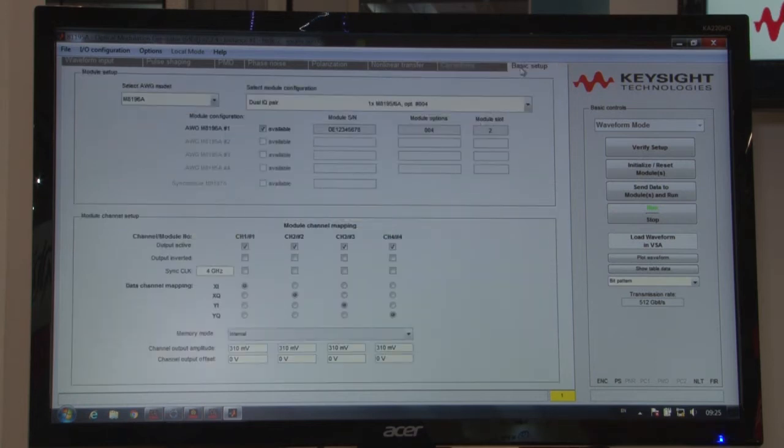On the basic setup page I have the access to turn on and off channels. I can assign channels to specific XI, X, Q, YI, Y, Q components. And last but not least I'm able to control the voltages, the output voltages of the arbitrary waveform generator. So the AWG is fully integrated in this software.